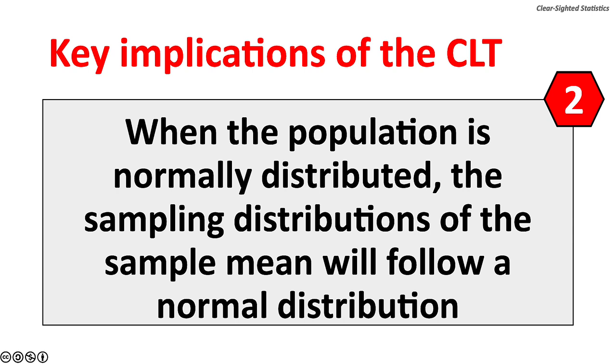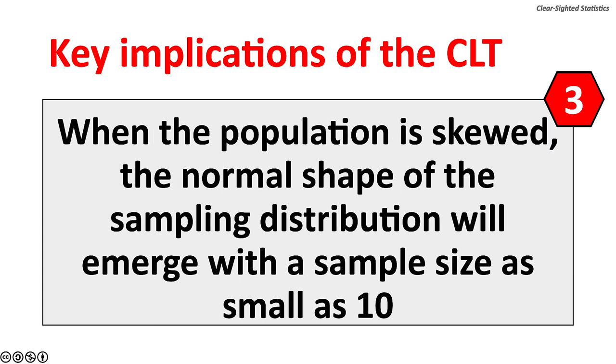Two, when the population is normally distributed, the sampling distribution of the sample means will follow a normal distribution. When the population is skewed, the normal shape of the sampling distribution will emerge with a sample size as small as 10.